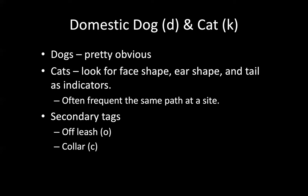Cats tend to frequent the same path at the same site every day — they do a daily tour of the area. The more you get familiar with a site, the more you'll be able to predict when that cat comes around. We do have a secondary tag for cats indicating whether they have a collar or not, but in my experience I've never gotten a good enough picture to tell. The dog on/off leash tag is easier — usually when they're on a leash, you'll see it or they'll be next to a human.